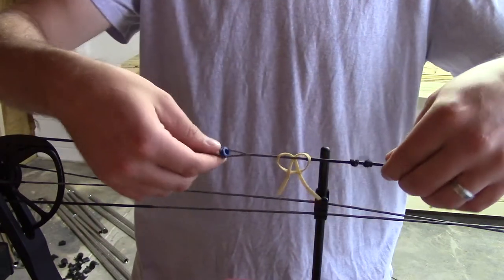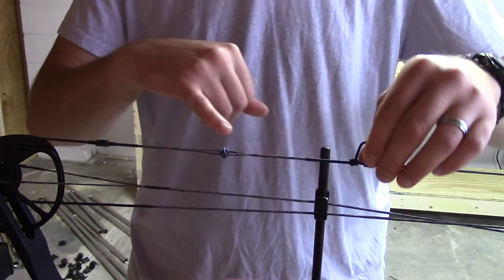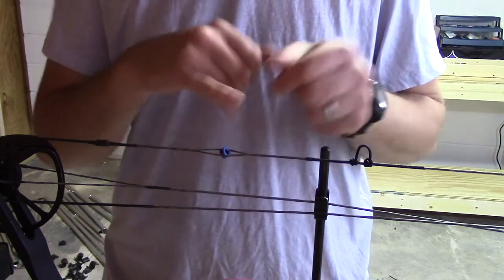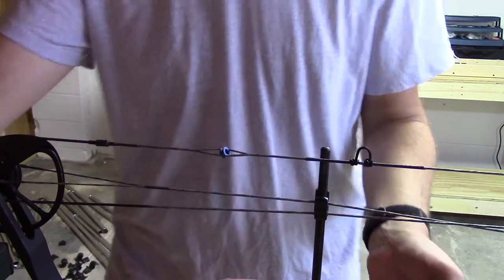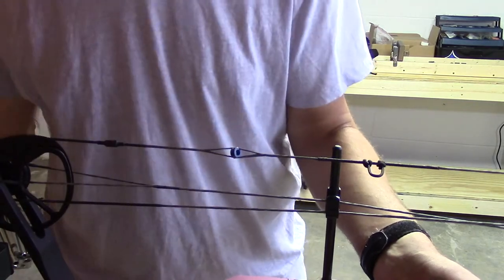We've got that under tension now. What I'm going to have to do is I am going to have to draw this bow back and make sure that I don't have anything weird going on here. I can move the peep now up and down, so I'm going to take this out of the press, and I'm just going to draw it back once or twice and adjust the peep accordingly.